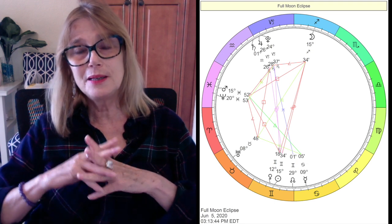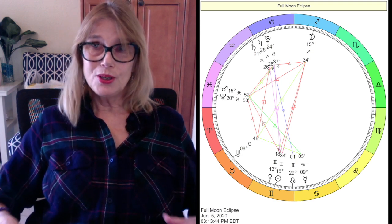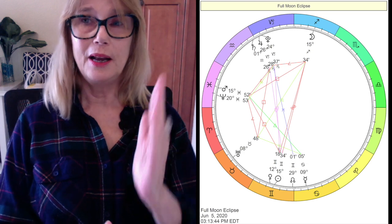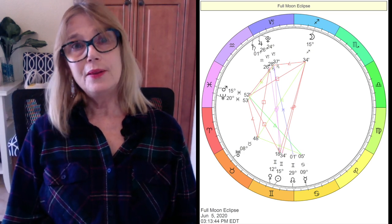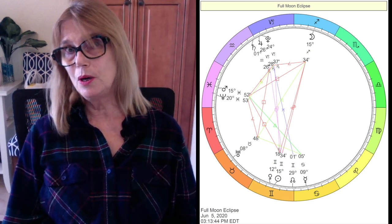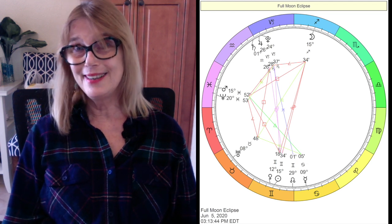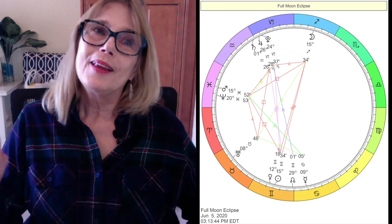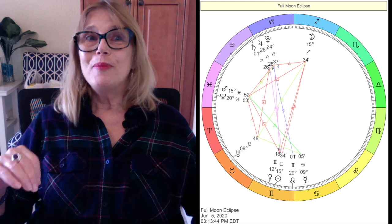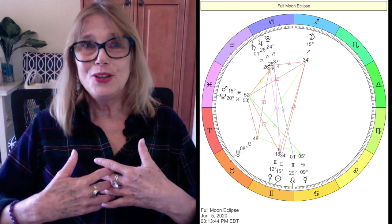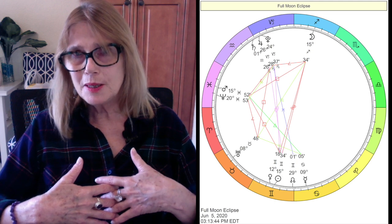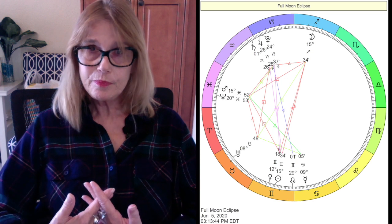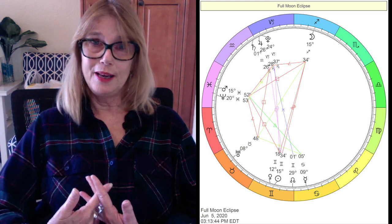It's got this T-square. It has a T-square, which is an opposition. It's like a triangle with two squares and an opposition that make a triangle. And the T-square is pointing to Pisces, to Mars and Neptune in Pisces. Gemini is trying to get information. That's what it does. It gathers information.